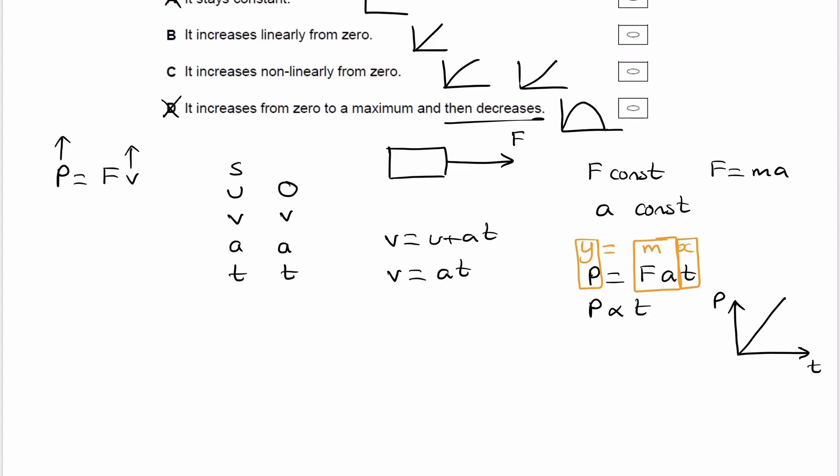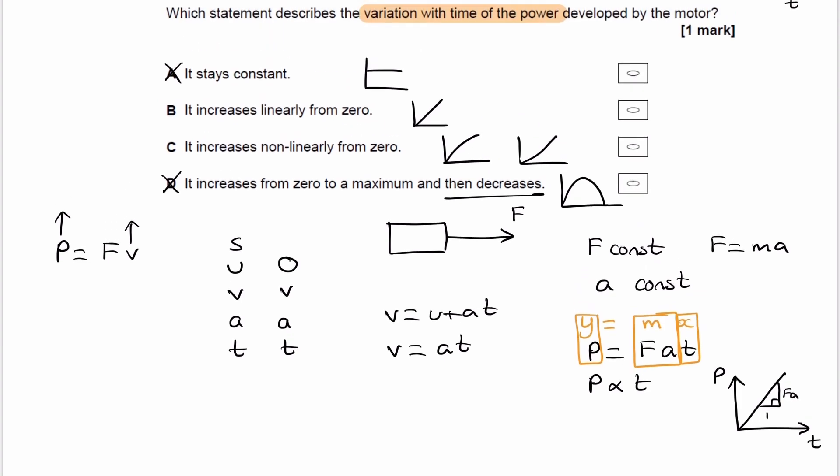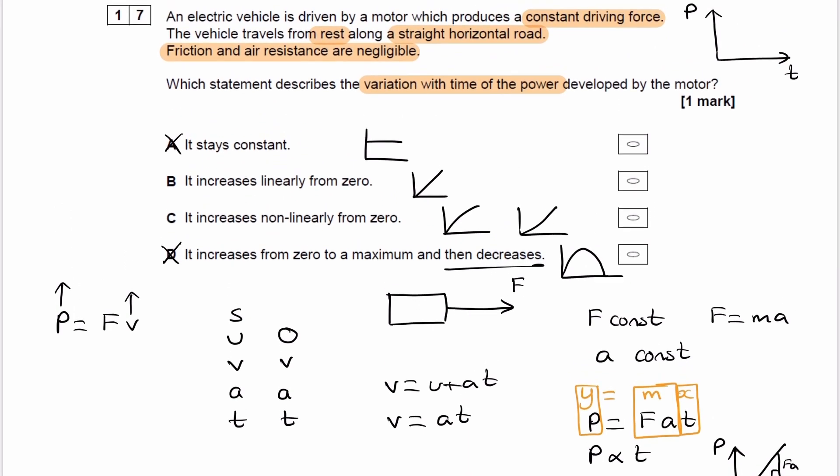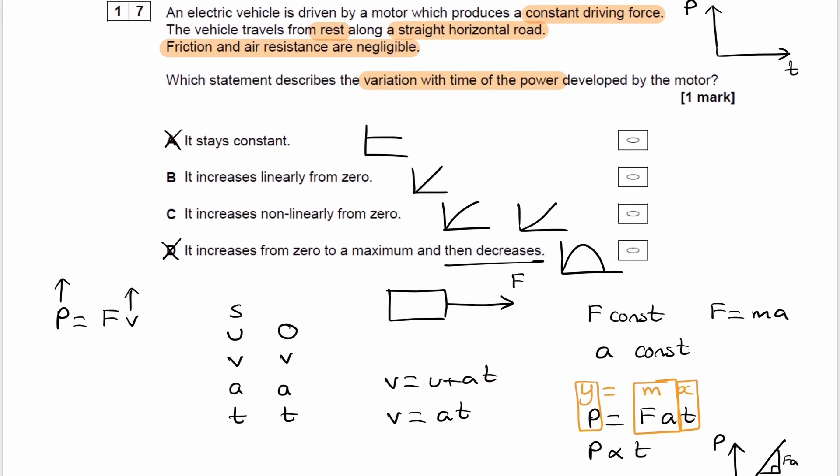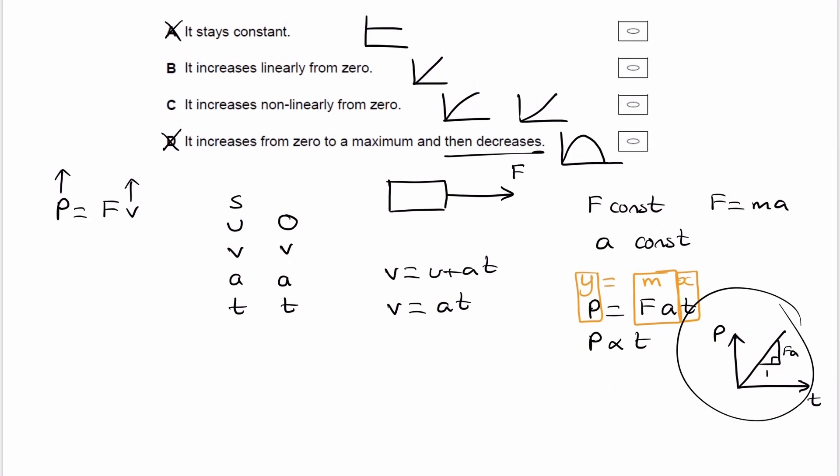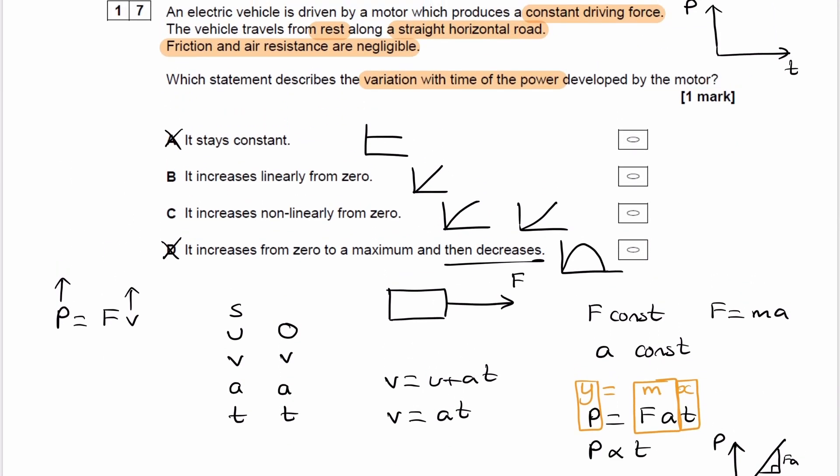So our gradient would be Fa, not that that's really relevant to the question, but there you go. So we know we have a straight line that goes through the origin. Going back to our options, it must therefore be B. The power increases linearly with time from zero.